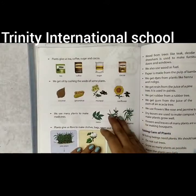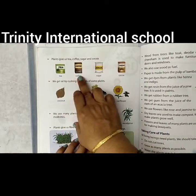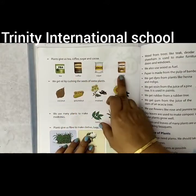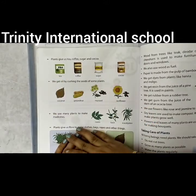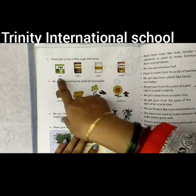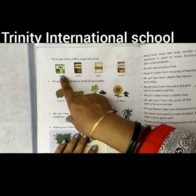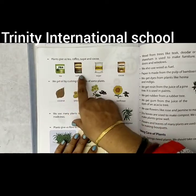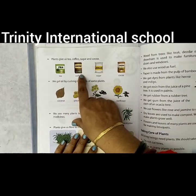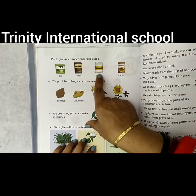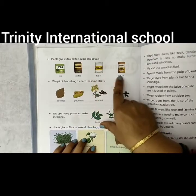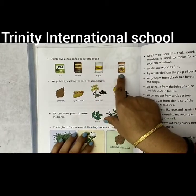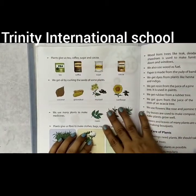We can also get tea, coffee, sugar, and cocoa from plants. Tea leaves are there, coffee beans are there, sugar we get from sugarcane, and cocoa also we get from plants.